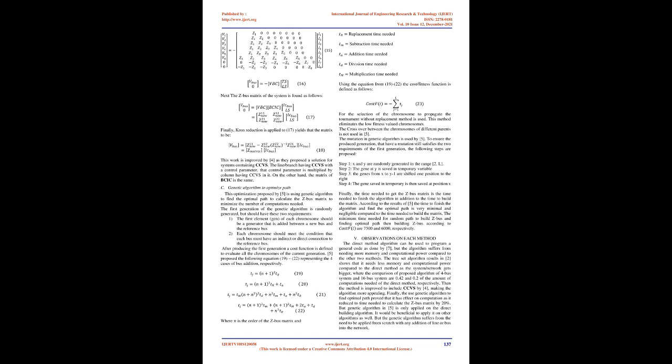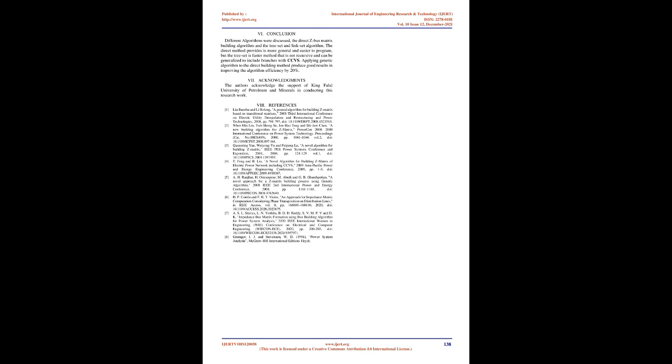The tournament selection method eliminates low fitness-valued chromosomes. Crossover between chromosomes of different parents is not used in reference 5. Mutation in the genetic algorithm ensures that produced generations still satisfy the two requirements of the first generation. The mutation steps are: Step 1, x and y are randomly generated in range 2 to L; Step 2, the gene at y is saved in a temporary variable; Step 3, genes from x to y-1 are shifted one position to the right; Step 4, the saved gene is placed at position x. According to reference 5, the time to find the optimal path is minimal and negligible compared to the time to build the matrix, with minimum times of approximately 7,500 and 6,000 respectively.